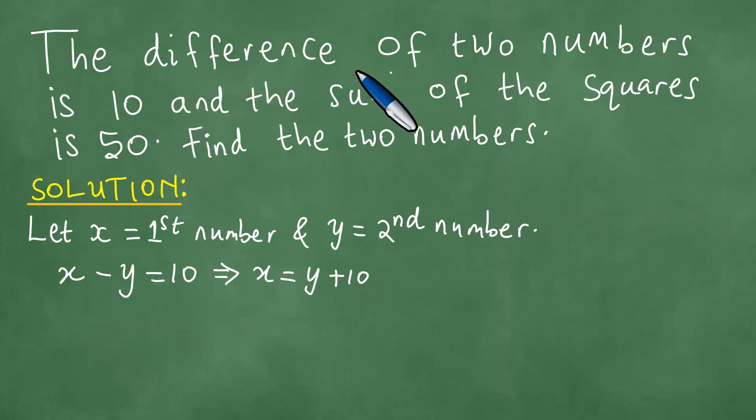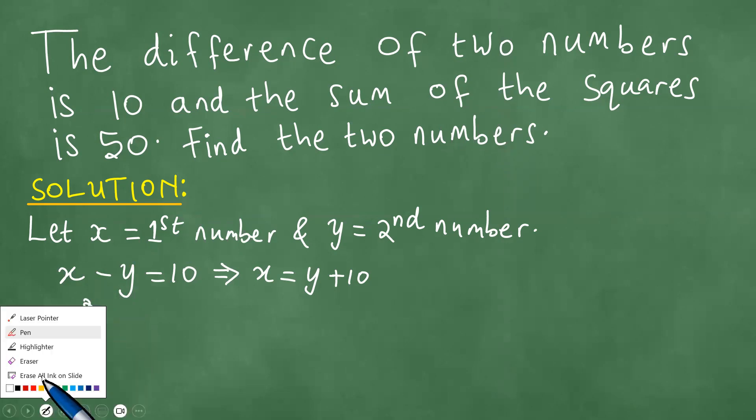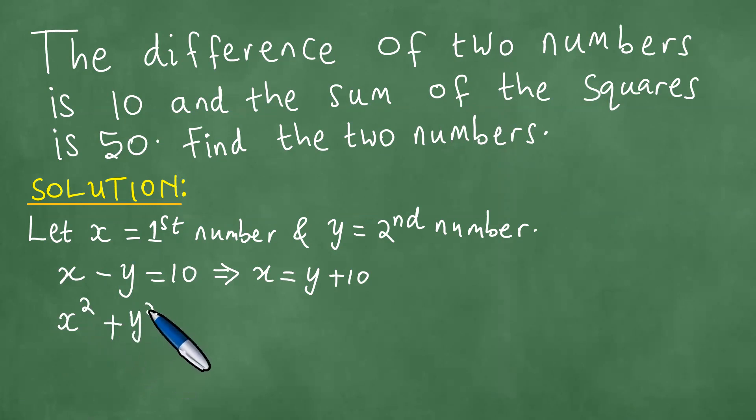The difference of two numbers is 10 and the sum of the squares is 50, and that means that x squared plus y squared equals 50. This gives us equation one and equation two.